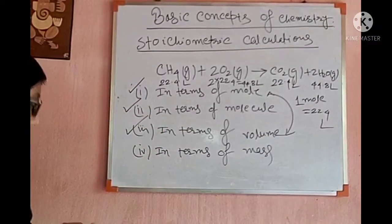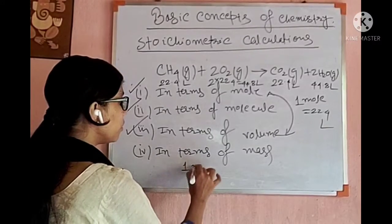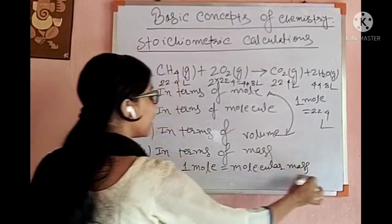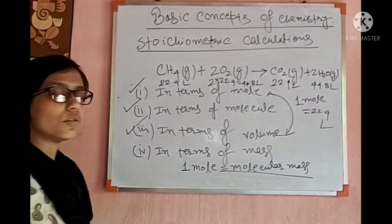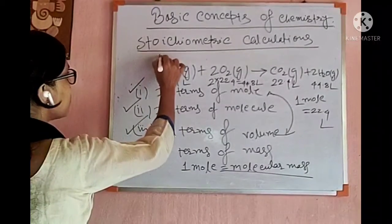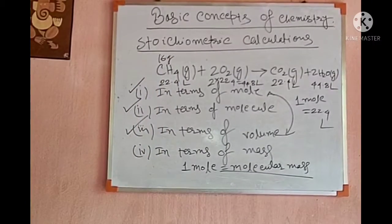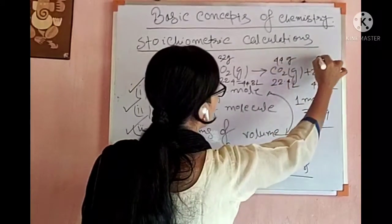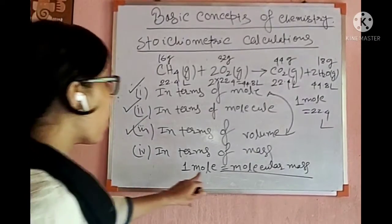The fourth type is in terms of mass. Just like the relationship between mole and volume, there is a relationship between mole and mass: 1 mole represents the molecular mass. The molecular mass of methane is 16 g, oxygen is 32 g, carbon dioxide is 44 g, and water is 18 g. I have written the molecular masses of all four compounds.